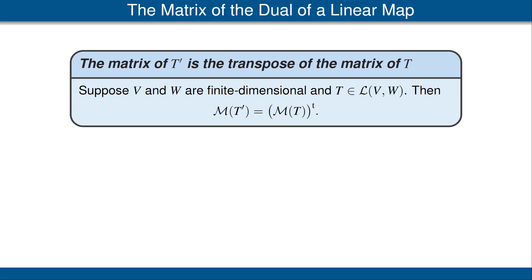That is what is intended by this equation: pick a basis of V, pick a basis of W, then use the dual basis of W and the dual basis of V to compute the matrix of T prime. Please be sure to read the proof of this result in the book.